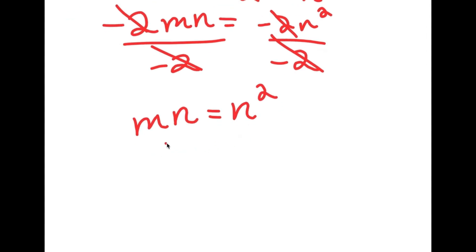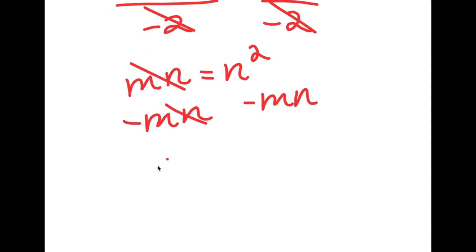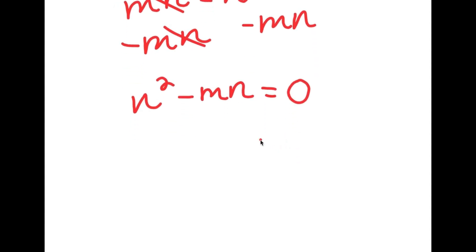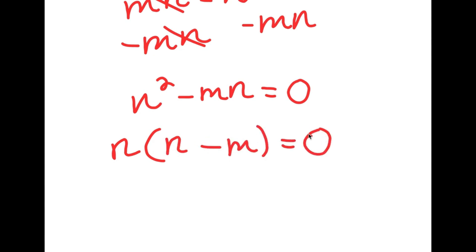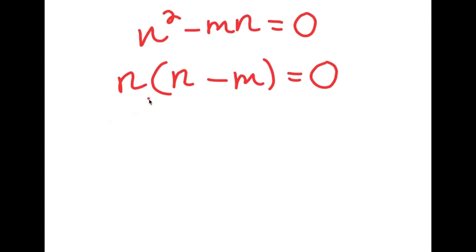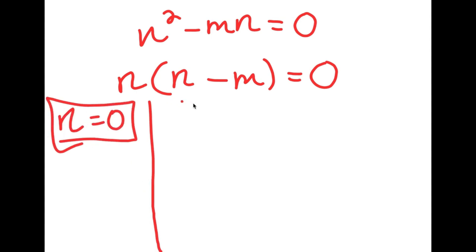Subtracting mn from both sides gives n squared minus mn equals zero. The greatest common factor is n, so factoring out n gives n times n minus m equals zero. This gives two solutions: n equals zero, and n minus m equals zero.